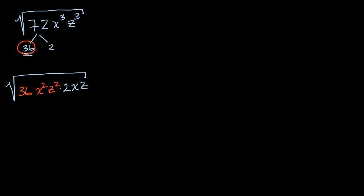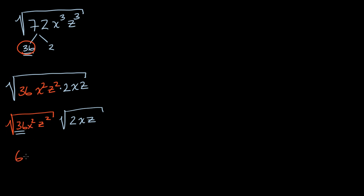Now this is pretty straightforward to simplify. Everything here is a perfect square, so this is going to be the square root of 36 times the square root of x squared times the square root of z squared — times the square root of 2xz. The square root of 36 is 6, the principal root of x squared is x, the principal root of z squared is z. I do that little line on the z to differentiate it so it doesn't look like my twos. So the final answer is 6xz times the square root of 2xz.